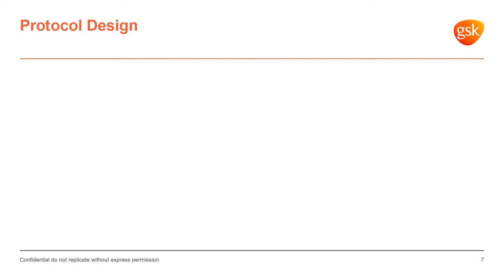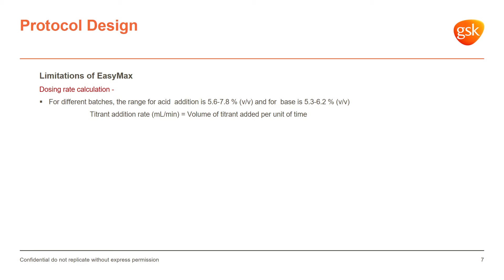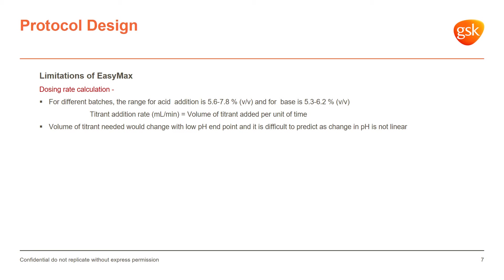Moving on to protocol design, we had to account for the different limitations of the EasyMax system. We were delivering a fixed amount of acid or base over varying amounts of time, so the titrant addition rate — volume of titrant added per unit time — is different when you are adding the entire acid titrant within five minutes versus doing the same thing over a span of 30 minutes.